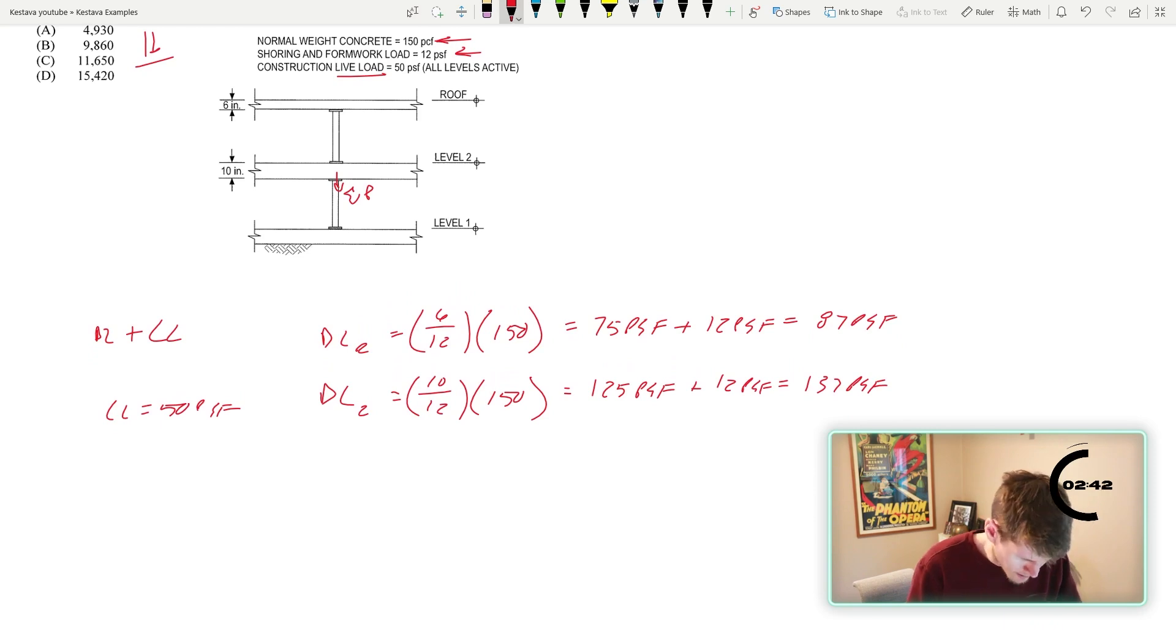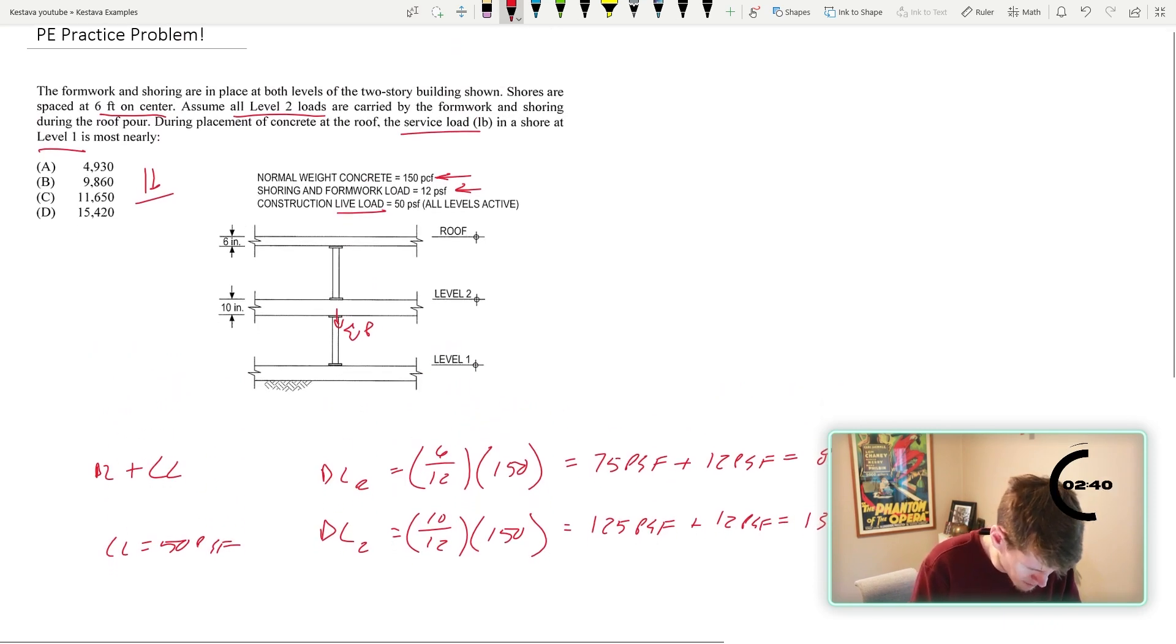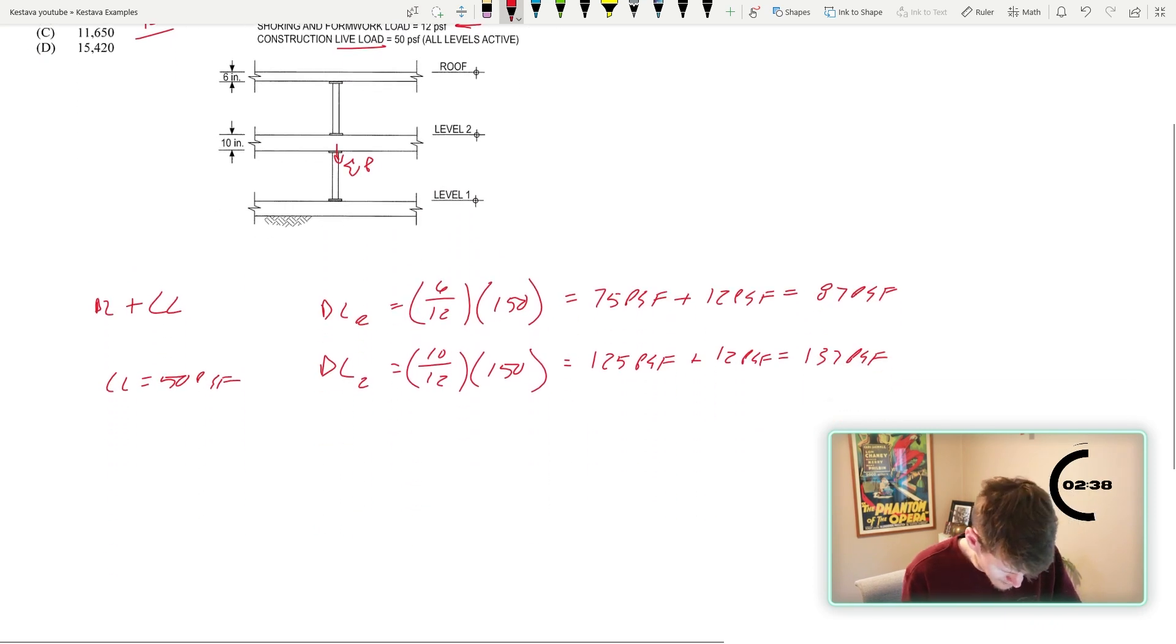So, what's our area? That's our load. What's our area? Six feet on center. Okay. So our area is six foot by six foot. That's 36 square feet. Two floors of that. So it's summation dead load.